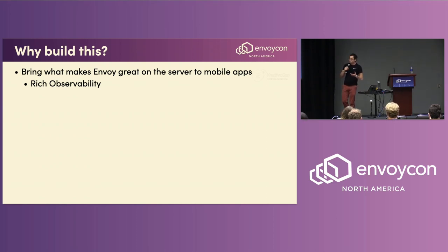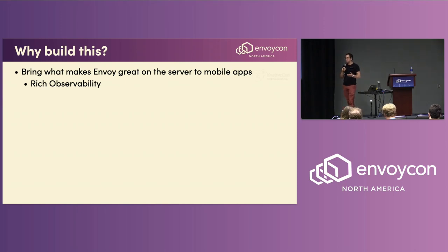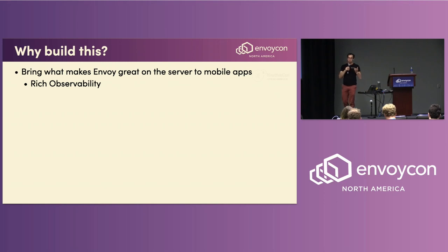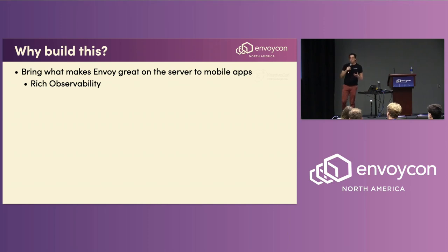One of the things Envoy is quite known for is its rich set of observability capabilities — there's a rich set of stats you can emit just by using the library. On mobile, where you have very limited resources, you have to be careful how you instrument and monitor your end users' devices. They might be CPU- or memory-constrained, or in an intermittent connectivity state. That rich, lightweight, optimized observability is extremely helpful to bring to a mobile context.